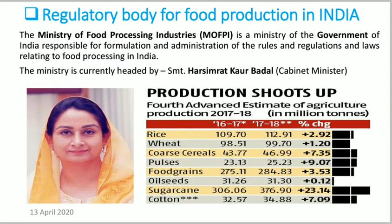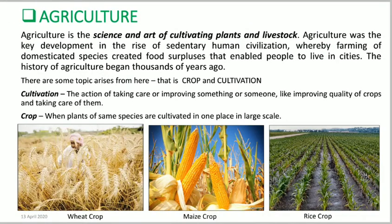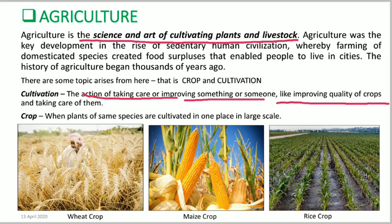Now let's come to what agriculture is. It is simply the science and art of cultivating plants and livestock. When we cultivate crops, cultivation means taking action or taking care for improving something — like improving the quality of crops and taking care of them.